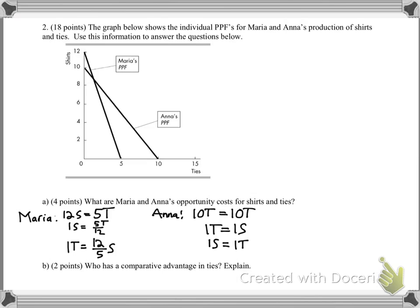So those are pretty much the costs there. But who has the comparative advantage? Well, the person who has the comparative advantage is the person with the lowest opportunity cost. Remember that, lowest opportunity cost. Pretty much, it would be Anna, because it's one shirt. She can produce one shirt versus Maria, who can produce 12 over 5 shirts. And since one is lower than like about two and a half or so, she has the lower opportunity cost, therefore the comparative advantage.